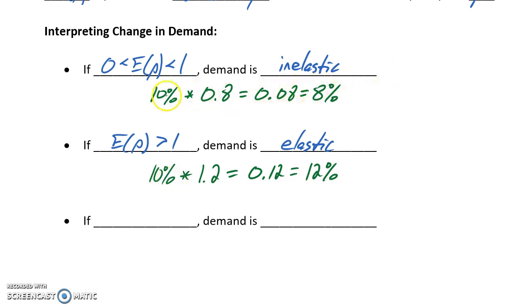In these two scenarios, in the first one we increased price and had a smaller decrease in demand, so increasing our price would actually increase our revenue. In the second scenario, where elasticity is greater than 1, our 10% increase in price results in a 12% decrease in demand.